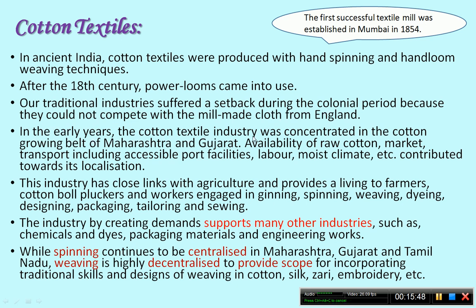In the early years the cotton textile industry was concentrated in the cotton-growing belt of Maharashtra and Gujarat. Availability of raw cotton, market access, transport including accessible port facilities, labor, and a moist climate contributed to its location in these states. Cotton needs a moist climate, which helps in better quality yarn production, and the cotton fiber produced in that region is also of better quality.